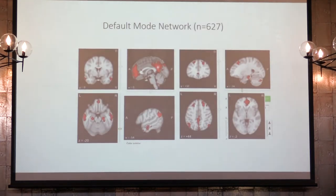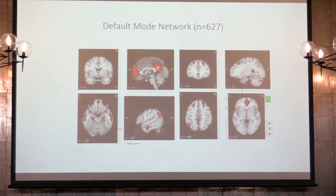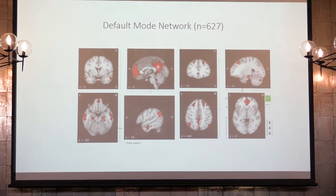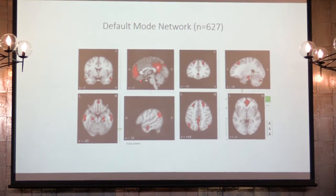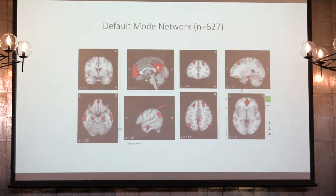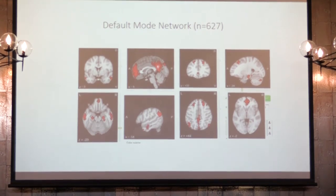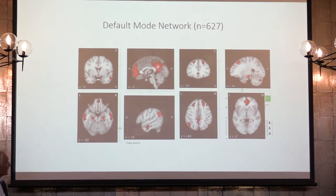The default mode network relates to yourself both cognitively and emotionally, but also to others, so it's also involved in social processing. This is based on a meta-analysis of 627 fMRI studies. The key nodes are the posterior cingulate cortex extending to the precuneus, the ventromedial prefrontal cortex, and also part of the dorsomedial prefrontal cortex. It extends to the parahippocampal area, which is your link to the memory network.